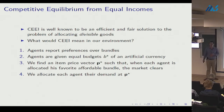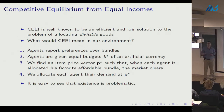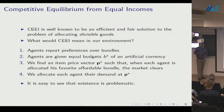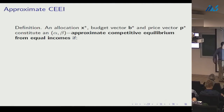If everyone has identical preferences, at any price vector we all demand the same bundle, so every good has demand of either zero or n. Existence is a big problem: market clearing error could be large. So I define a notion of approximate competitive equilibrium with two parameters alpha and beta. An allocation, budget, and price vector constitute an alpha-beta approximate competitive equilibrium from equal incomes if three conditions hold.